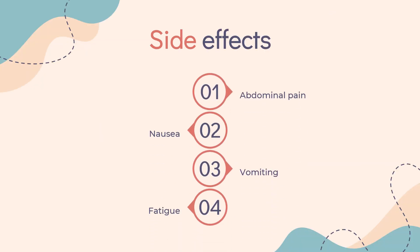Side effects: The following side effects have been reported by people with Parkinson's disease treated with Entacopone: abdominal pain, nausea, vomiting, fatigue, and dry mouth.